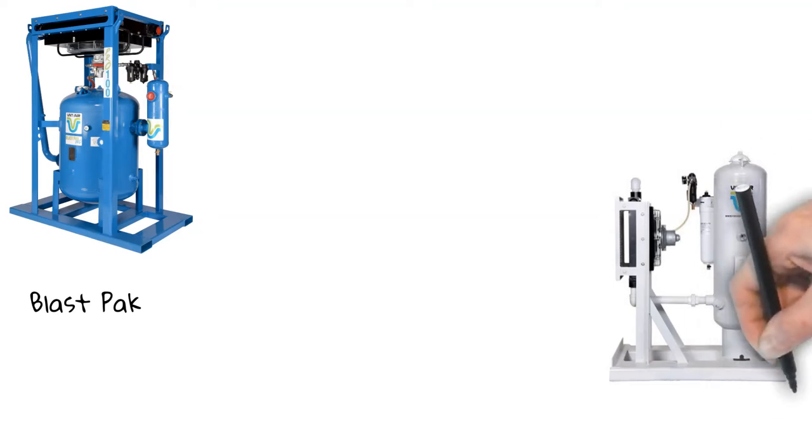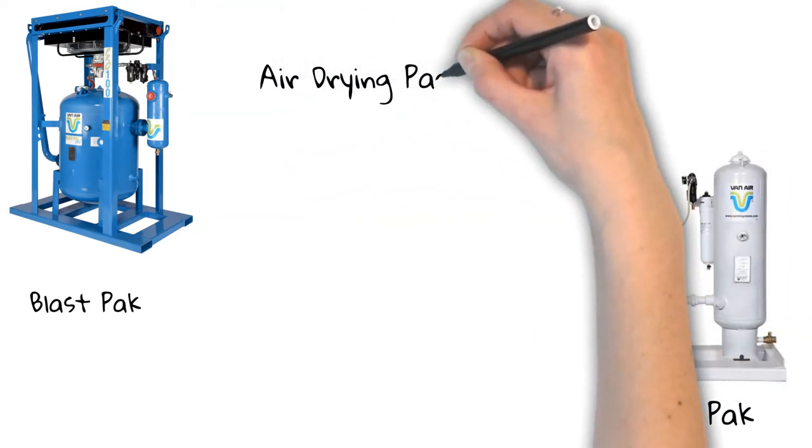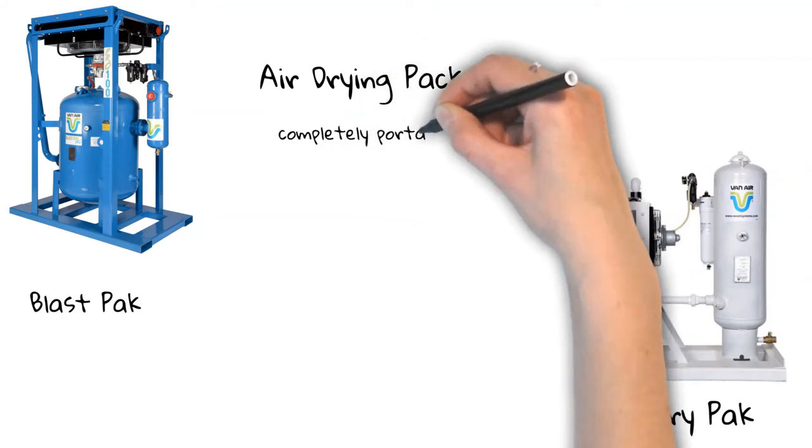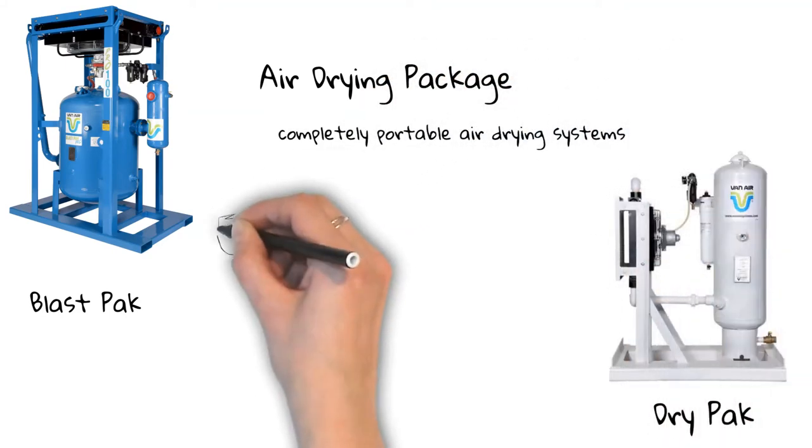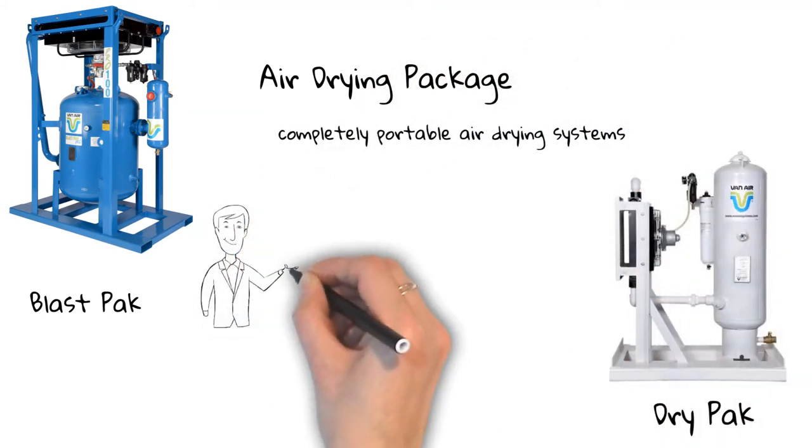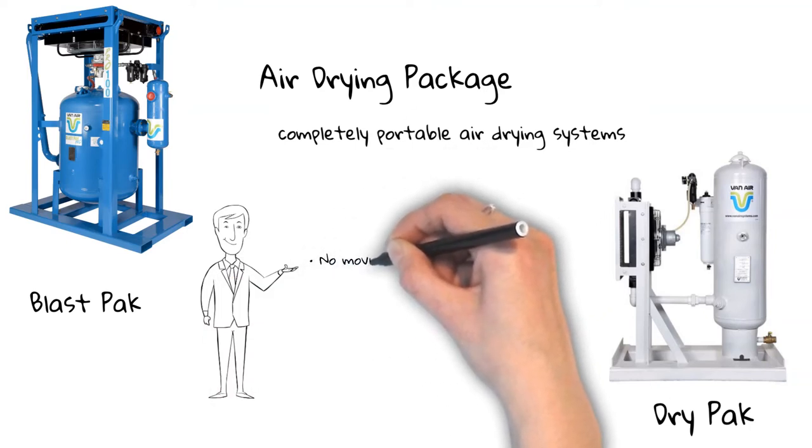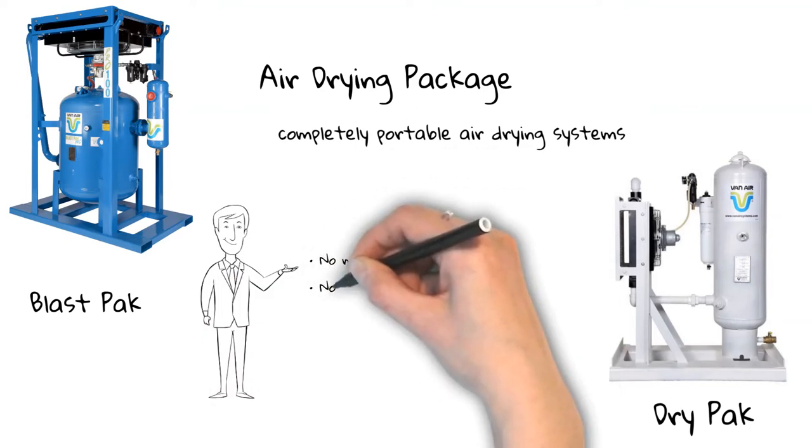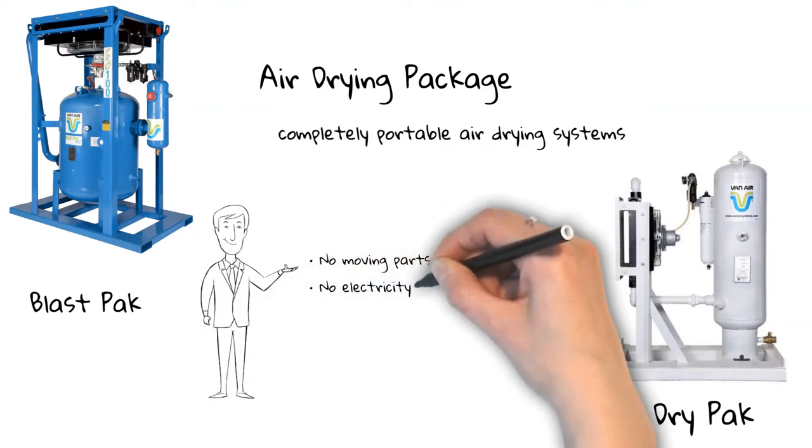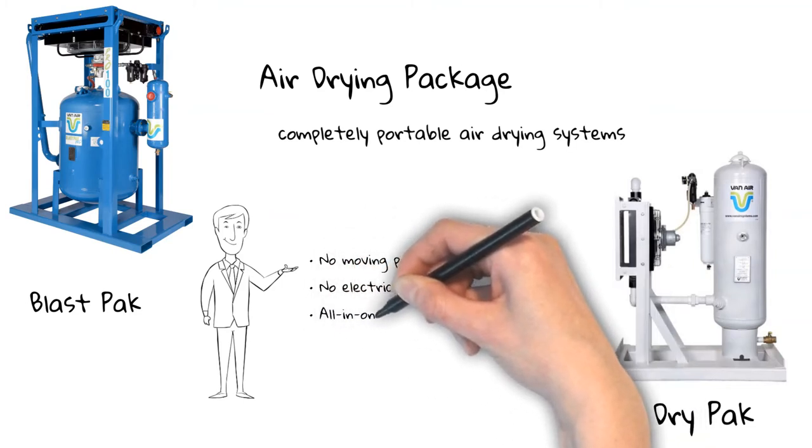Drying packages are completely portable air drying systems. They include an air dryer with desiccant, filter, aftercooler, and forklift skid. These systems have no moving parts and no electricity required. They are all-in-one packages and the only option that actively dries compressed air using desiccant.